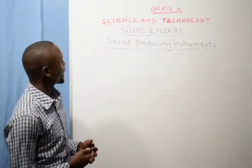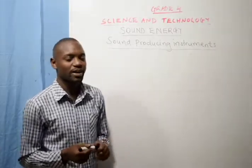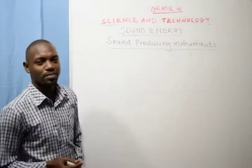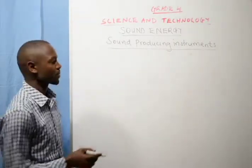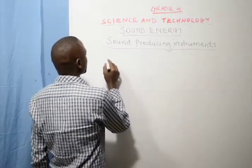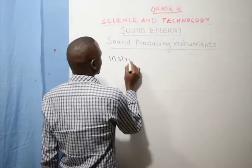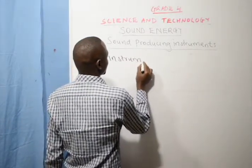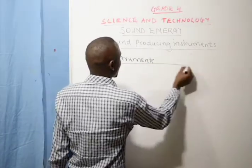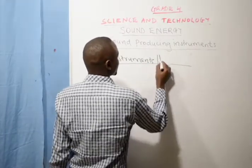We said that reflected sound is called echo. So today I want us to look at sound producing instruments. I know you know very many instruments which produce sound, and the different ways in which the instrument produces sound. So we are going to look at these instruments and how they produce sound.